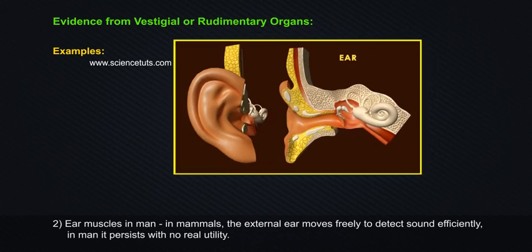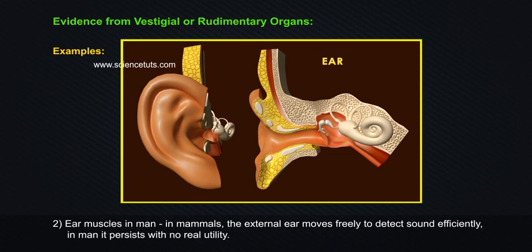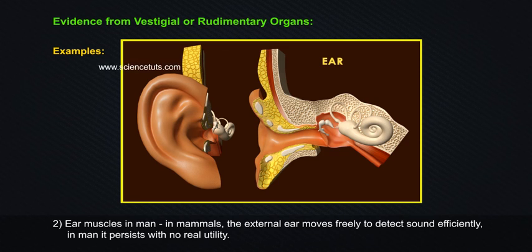Example 2: Ear muscles in man. In mammals, the external ear moves freely to detect sound efficiently. In man, it persists with no real utility.